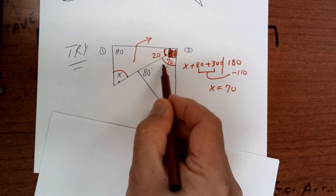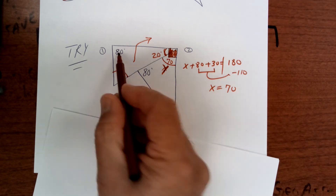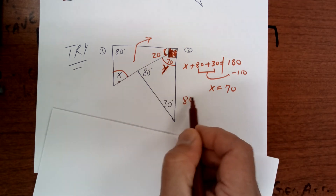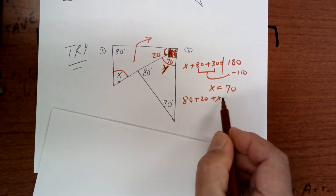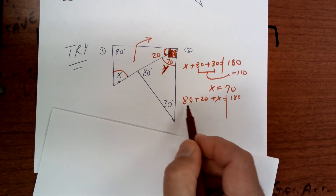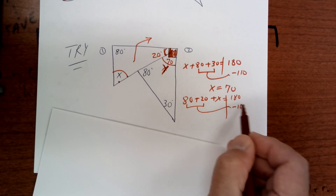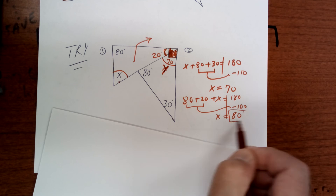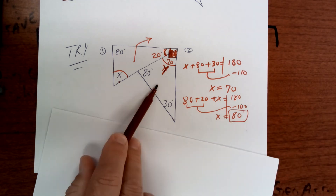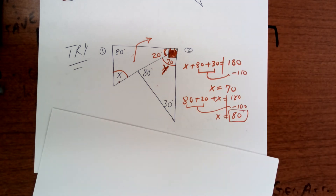Maybe I should have called this one y — in any event, the equation I want to see is 80 plus 20 plus x equals 180 degrees. On today's work I want you to show the equations. Subtract 100 and get x equals 80 — that's your answer. The transition from this triangle to that triangle was due to this right angle. It's a bit tricky but that's how you do it.